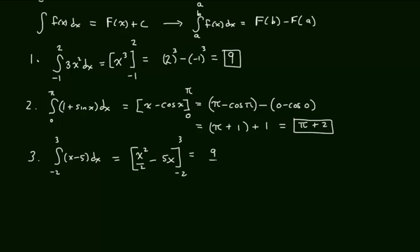So, 9 halves minus 15. That's when I plug in the 3. And then I get 4 over 2 plus 10 when I plug in the negative 2. And that comes out to be negative 45 over 2. It's a negative quantity.